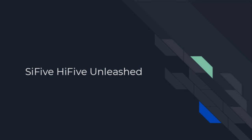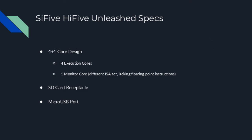When I got Dylan working on this, we had a couple of SiFive HiFive Unleashed boards in our department — a couple of colleagues had spent the money on them. If NetBSD was almost running on QEMU, let's get it running on actual hardware. The HiFive Unleashed has a four-plus-one core design: four performant cores for most execution and one monitor core with a different ISA set — lacking floating point instructions — creating a mismatch between the cores. It had an SD card receptacle and a micro USB port.